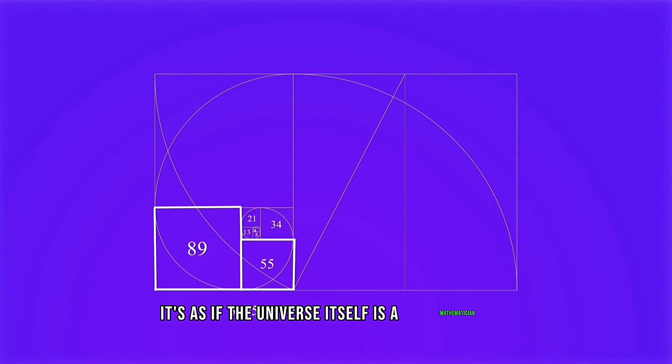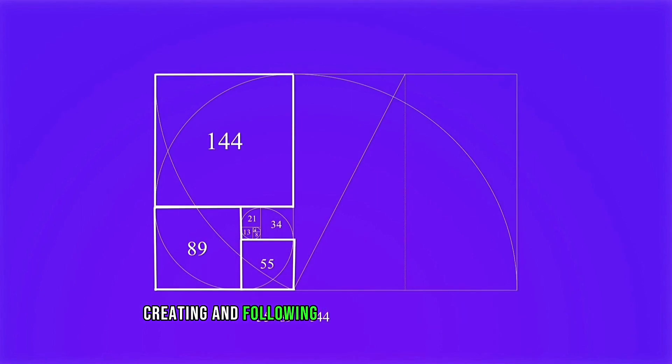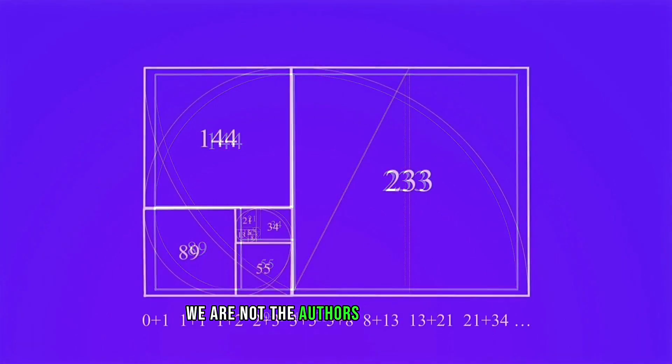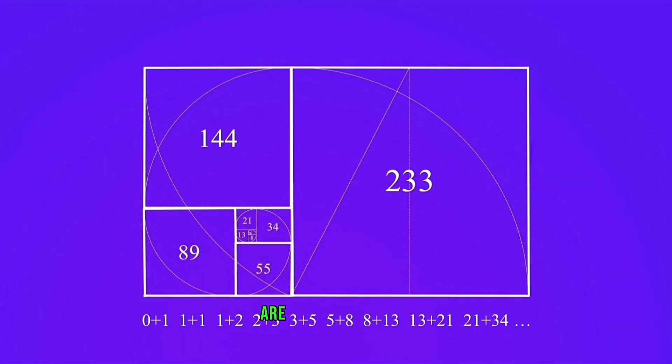It's as if the universe itself is a mathematician, creating and following its own mathematical rules with humans merely playing catch-up. This perspective views mathematics as a universal language, a code that underlies the fabric of the universe. We are not the authors of this language but rather, we are its interpreters.